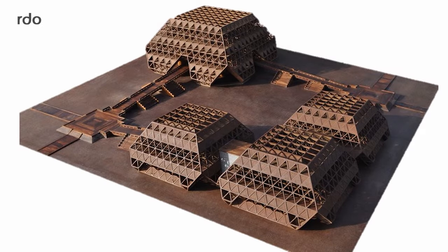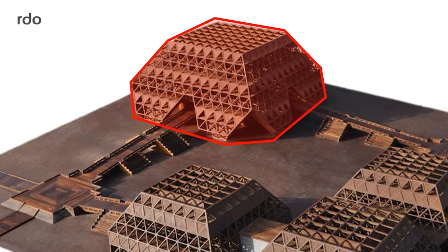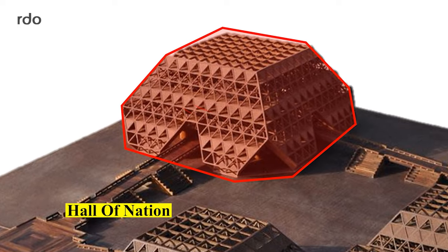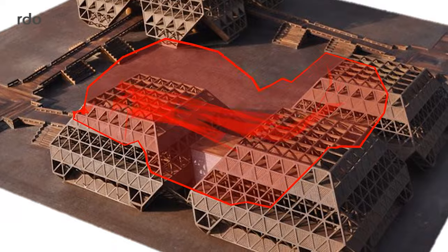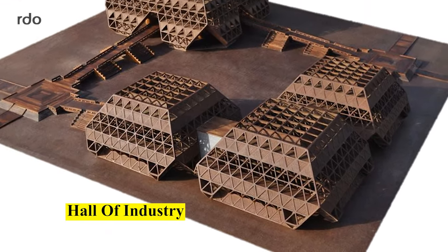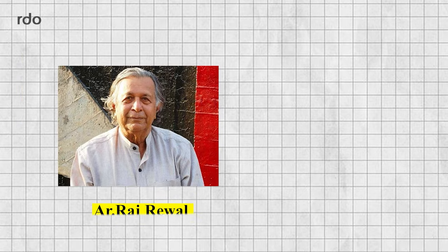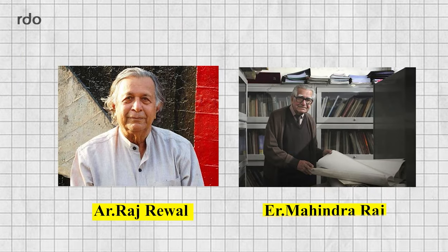It was a complex of five large permanent exhibition hall structures. The largest hall among the five was the Hall of Nations, and the other four smaller halls were known as the Hall of Industry. The structure was designed by architect Raj Rawal and engineered by Mahindra Raj.